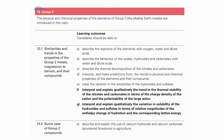Today, we will go into Chapter 10, Group 2. We have to interpret and explain the variation in solubility of the Group 2 hydroxides and sulfates in terms of the relative magnitude of the enthalpy change of hydration and lattice energy.